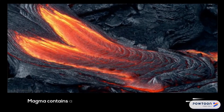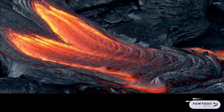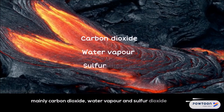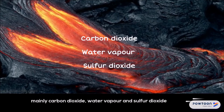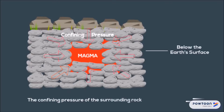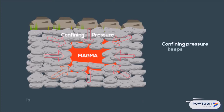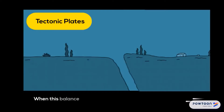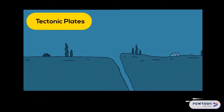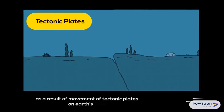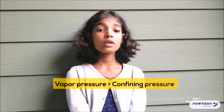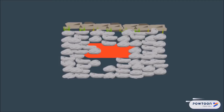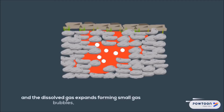Magma contains a lot of dissolved gases, mainly carbon dioxide, water vapor, and sulfur dioxide. The confining pressure of the surrounding rock is usually greater than the vapor pressure of these gases. When this balance is disturbed — for example, as a result of movement of tectonic plates on the Earth's crust — vapor pressure becomes greater than the confining pressure, and the dissolved gas expands, forming small gas bubbles called vesicles.